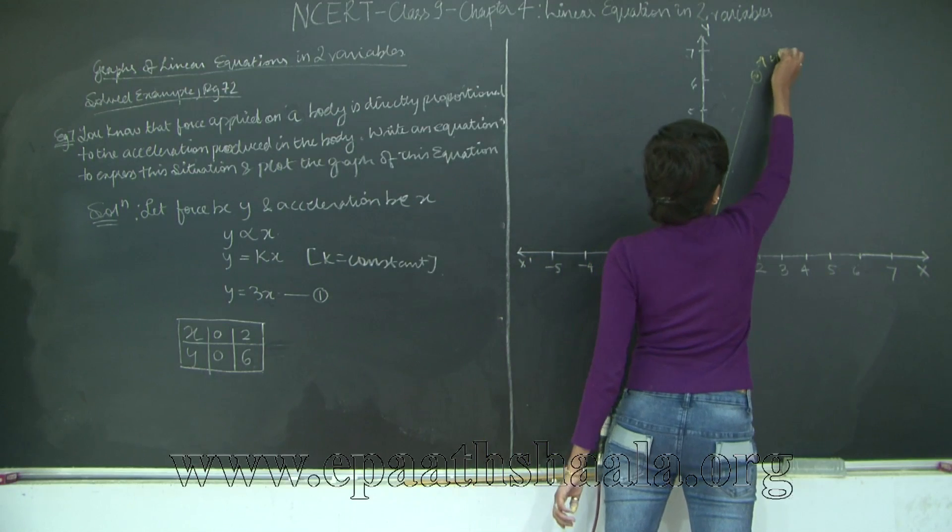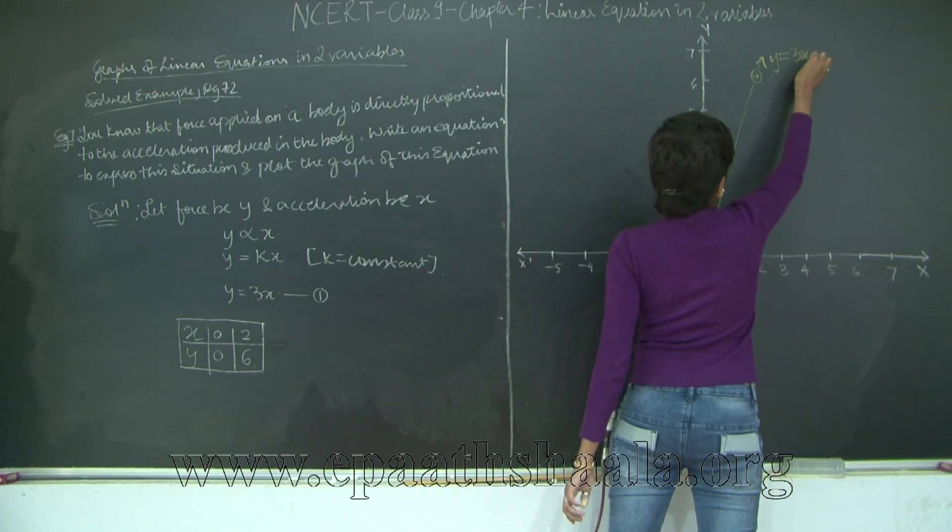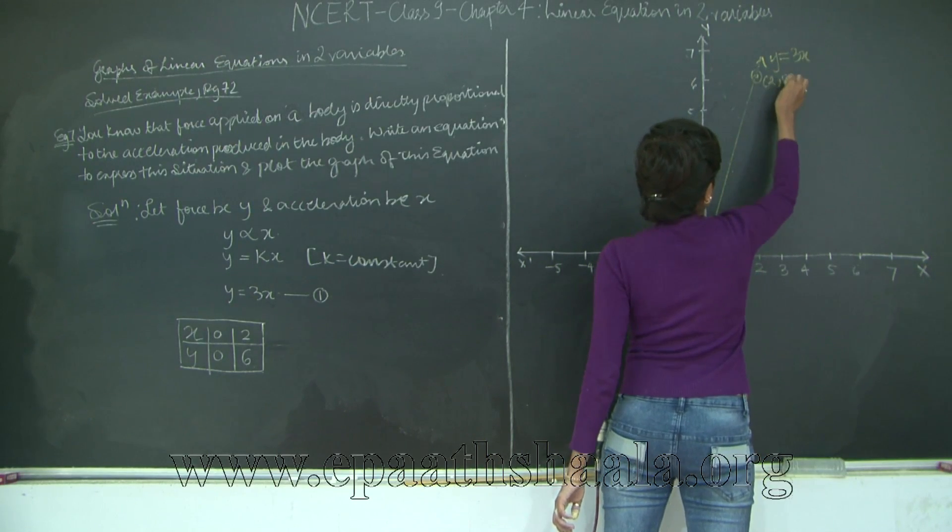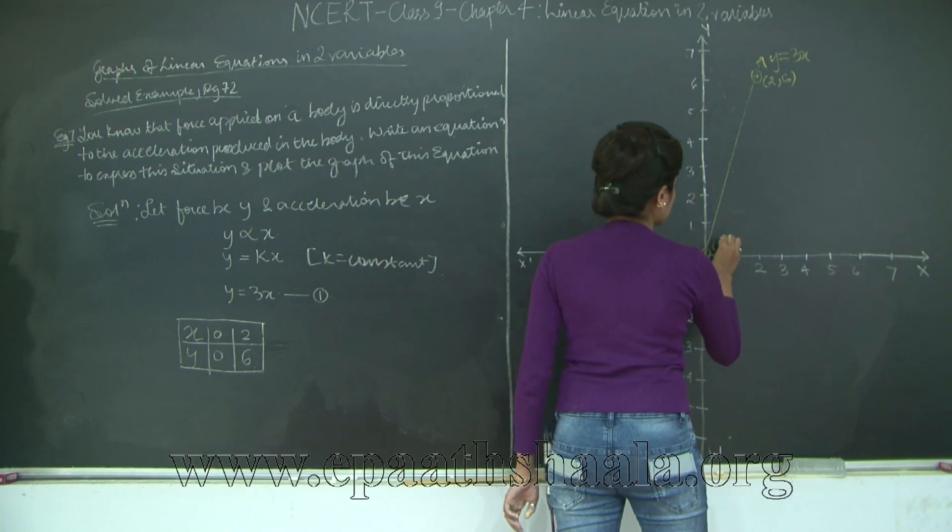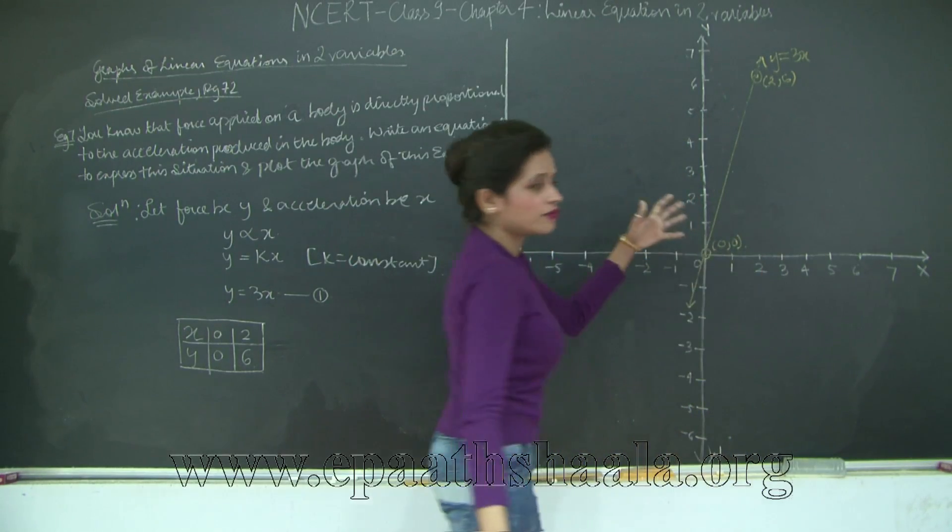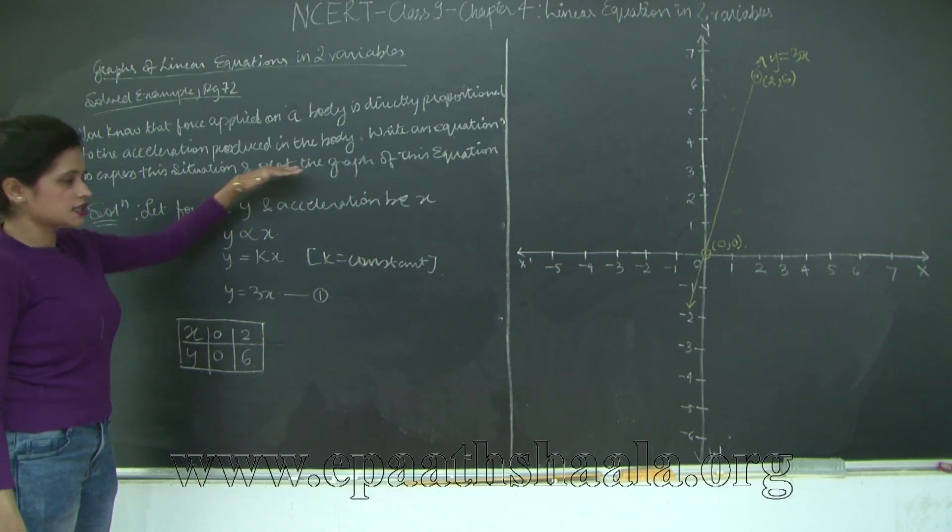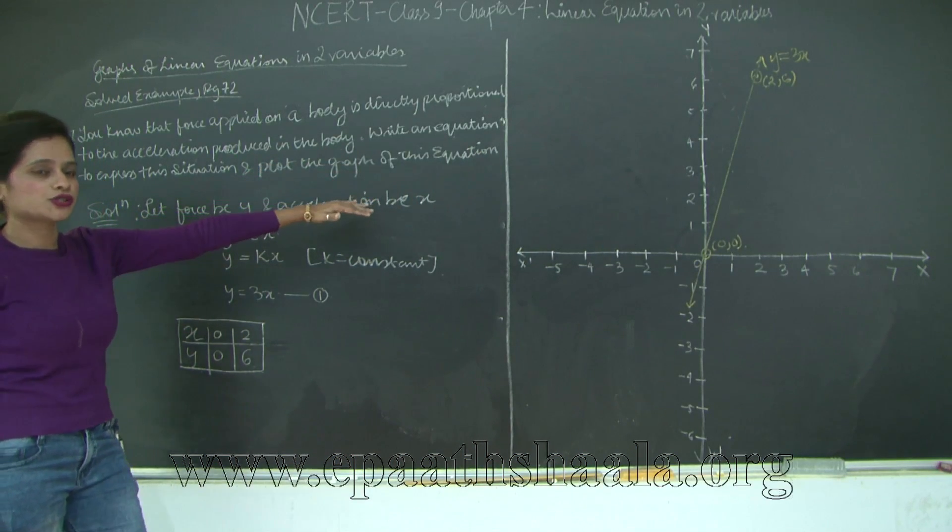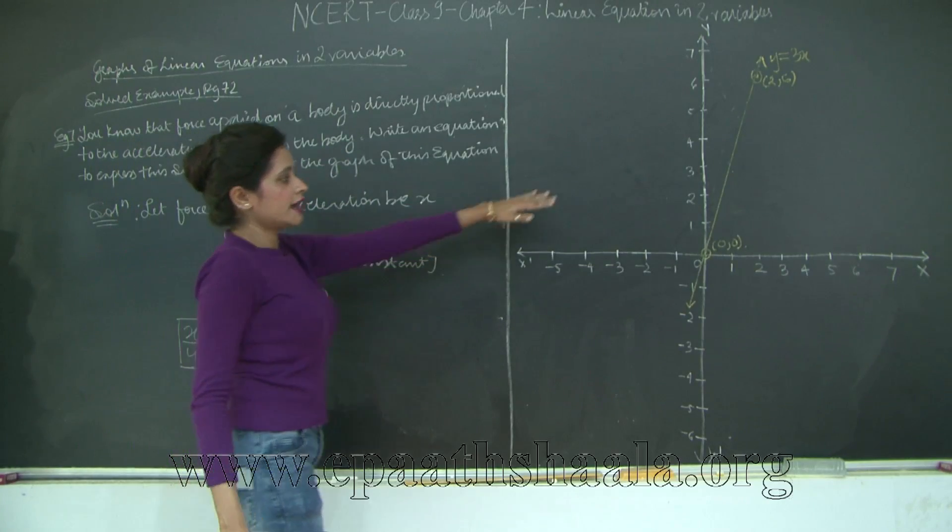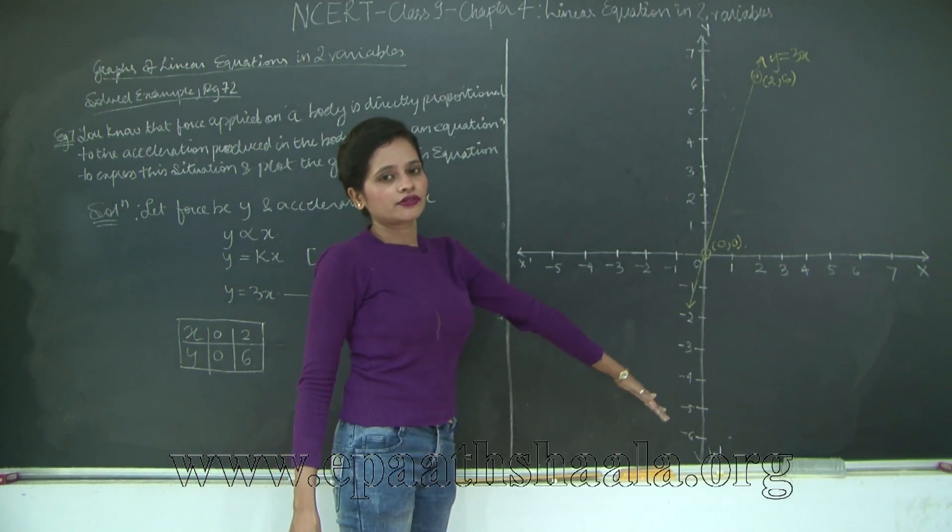So I will go ahead and draw my line. So this equation of my line is y is equal to 3x. This point is (2, 6) and this point is (0, 0). Therefore we have deduced the equation of a line for the situation where force is directly proportional to the acceleration in the body as well as we have drawn the equation of this line.